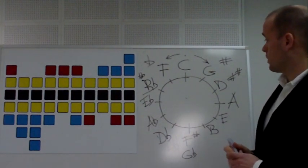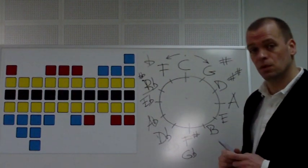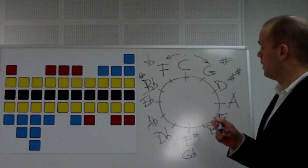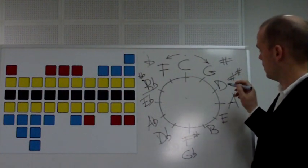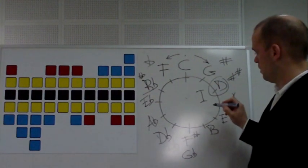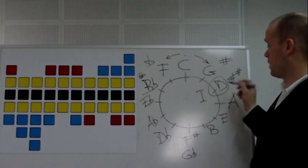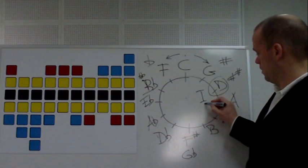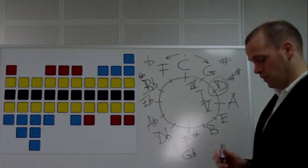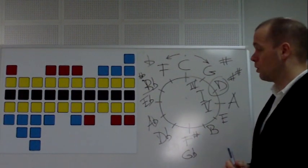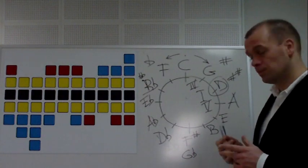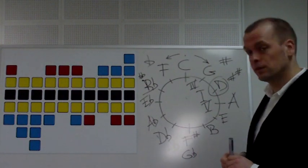Another thing that also works is that if you have a blues, which has a 1, 4, 5, and if you pick a key, say D, that is 1, then the 4 and the 5 are adjacent. So A is 5 and G is 4. So also for figuring out your blues chords, this circle is really convenient. Well that's it, I'll get back to the scales now.